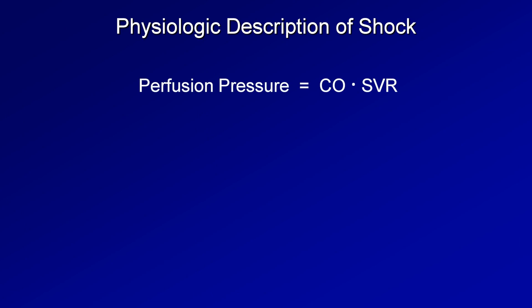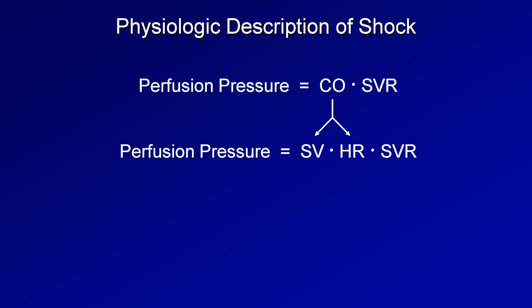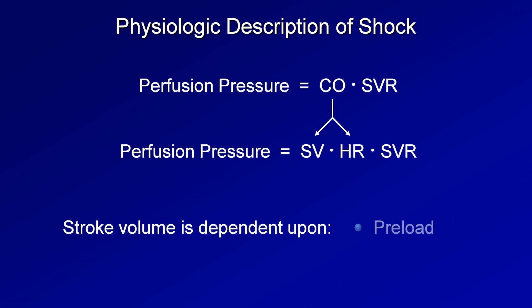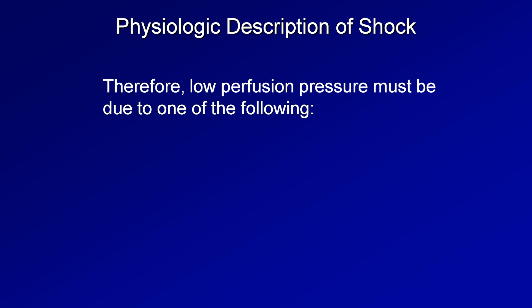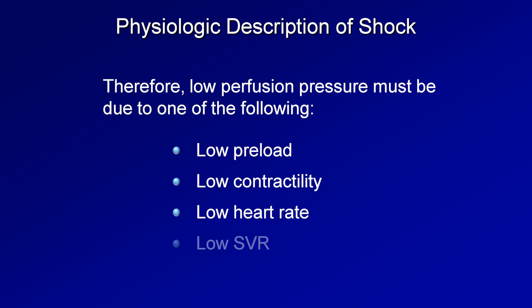We can break this equation down further by recognizing that cardiac output is equal to the heart stroke volume times the heart rate. The stroke volume is dependent upon three physiologic parameters: preload, which is how full the left ventricle is at the end of diastole; contractility, which is how well the left ventricle squeezes during systole; and afterload, a complete discussion of which is beyond the scope of this video. Therefore, low perfusion pressure must be due to one of the following: low preload, low contractility, low heart rate, or low SVR. If a patient has low perfusion pressure — which usually means hypotension — they must have a derangement of one of these four parameters.